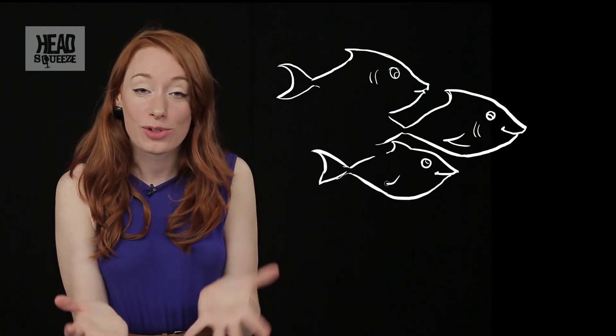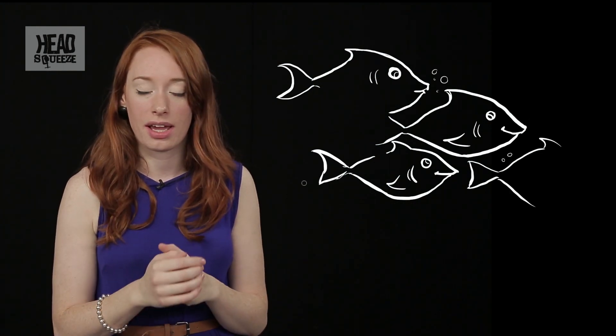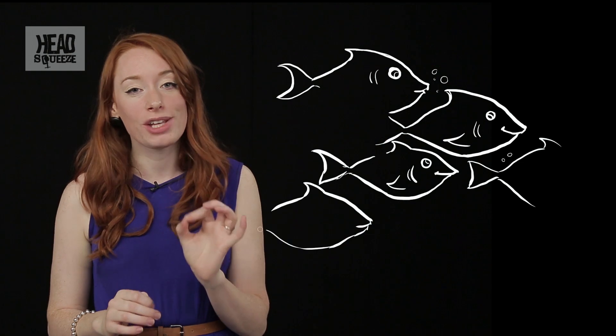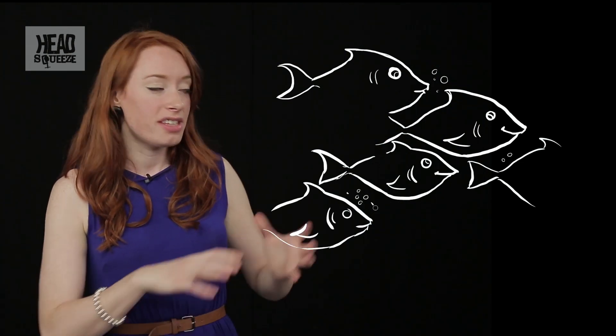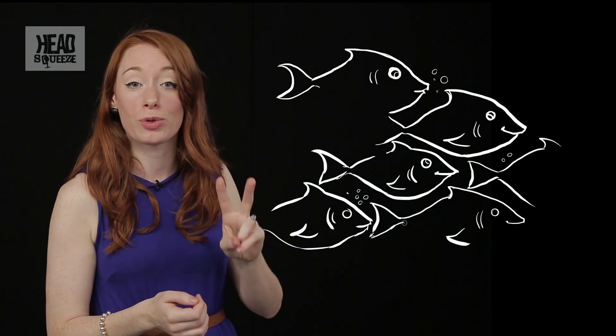Now by watching this school of fish you could be forgiven for thinking that they were operating under the directions of a single leader but actually something far more interesting is going on. These incredible shapes and patterns are just created by two very simple rules between the fish.